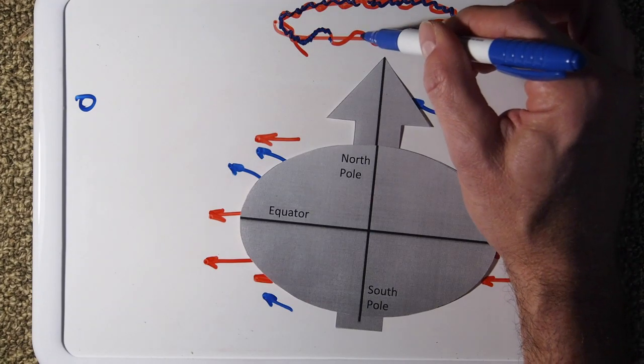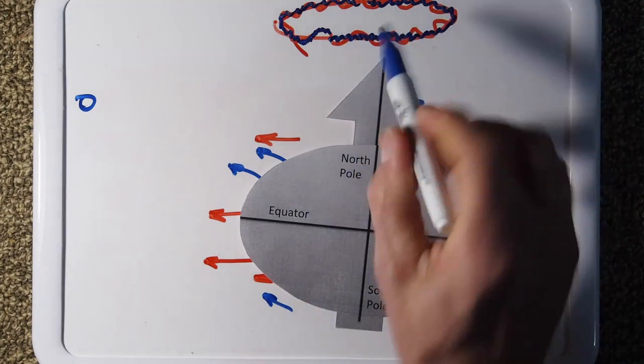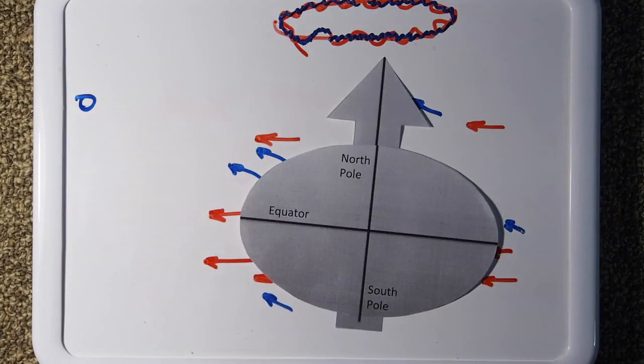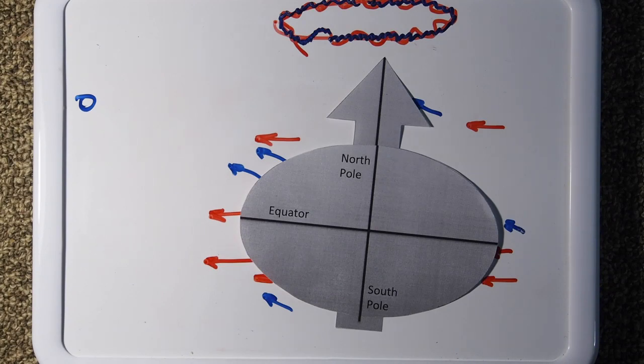There's a finer motion superimposed on it. Now, the main 26,000 year cycle was known even to the ancient Greeks, to Hipparchus, the ancient astronomer. But the finer motion is much harder to measure. And that was discovered by accident by the British astronomer James Bradley in 1728.